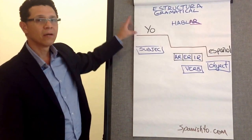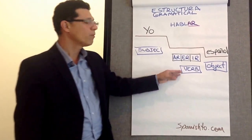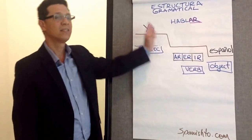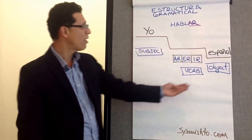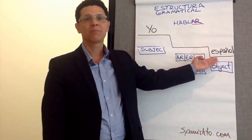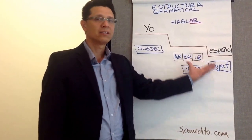Okay, so we have the subject or the sender, the verb or the message. So the sender sends the message. And at the bottom, we have the object. In this case, it's Español or Spanish. It's the receiver.